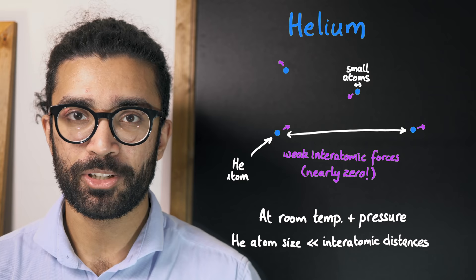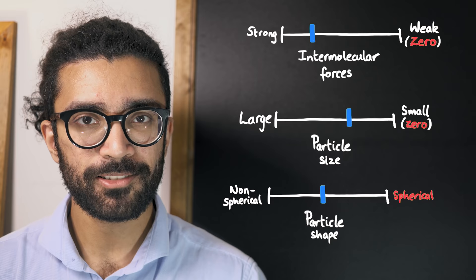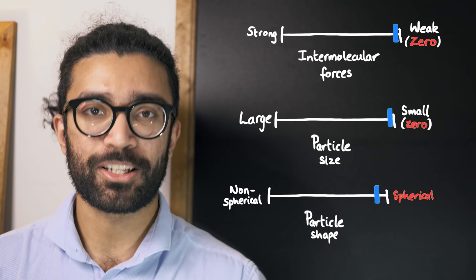So what we're seeing here is sort of a set of sliding scales. The closer each scale gets to our ideal gas assumption, the better the ideal gas model is for representing our real gas. And in fact, for gases like helium, we see a very minuscule difference between the ideal behaviour and the real gas behaviour.